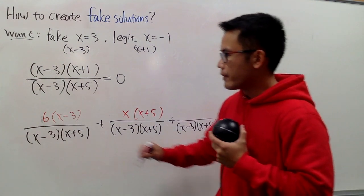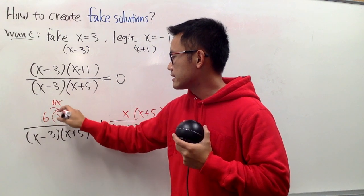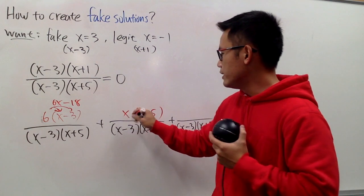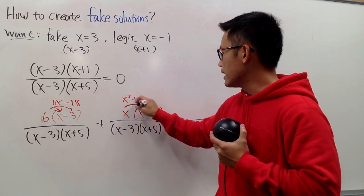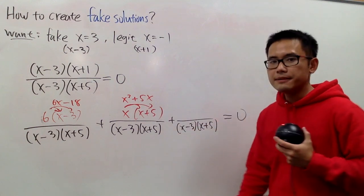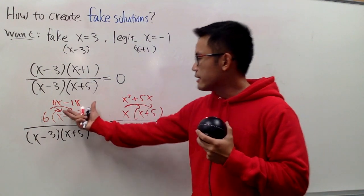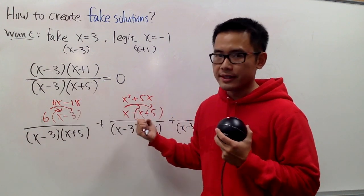Here is the deal. If you multiply, you see, this is 6x, and then this times this is 6 times negative 3, which is negative 18, and then if you do this times that, this times that, this is x squared plus 5x. So here is the deal. On the top, this is what we have, and ideally, we will have to combine like terms on the top.